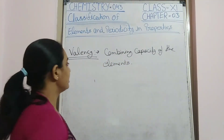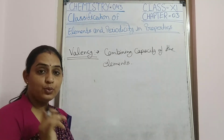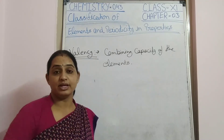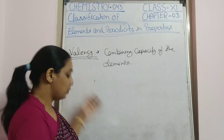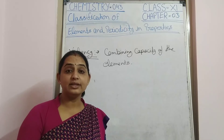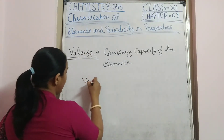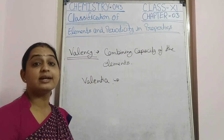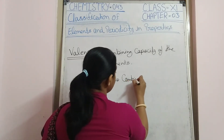The next topic is valency. Valency is the combining capacity of any element. The word is derived from the Italian word 'valentia', which means combining capacity.